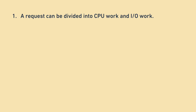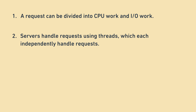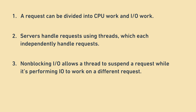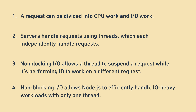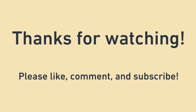I hope this is all helpful. Let's recap. First, the work of fulfilling a request can be divided into CPU work and IO work. Second, servers handle requests using threads, which each independently handle requests. Third, non-blocking IO allows the thread to put down a request while it's performing IO to work on a different request's CPU component. Fourth, non-blocking IO allows Node.js to efficiently handle IO-heavy workloads despite having only one thread. Thanks for watching — please like, comment, and subscribe. You can also share this video with anyone who could benefit from it. See ya!